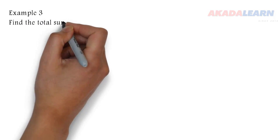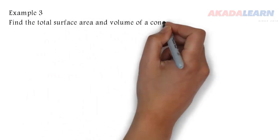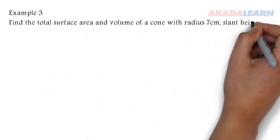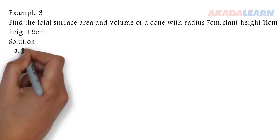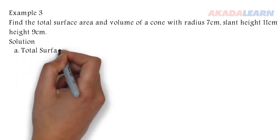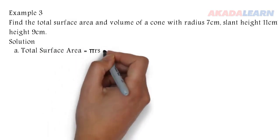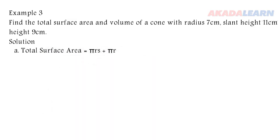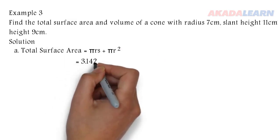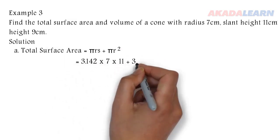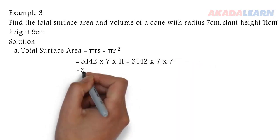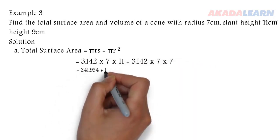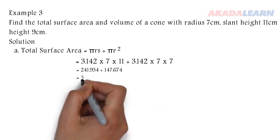Find the surface area and volume of a cone with radius 7 centimeters, slant height 11 centimeters, and height 9 centimeters. The surface area is πrs + πr². Everything we need is given to put into the formula. Multiplying the first terms, we get 241.934. The second one also we got, then we add everything together and put our unit centimeters squared.